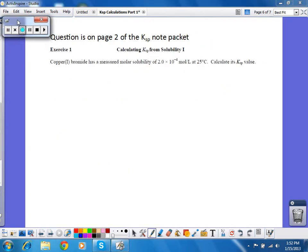So, this is a typical question on how to calculate Ksp from solubility. Copper 1 bromide has a measured molar solubility of that. Calculate Ksp. So, the first thing I do is write an equation. And I write a K expression.